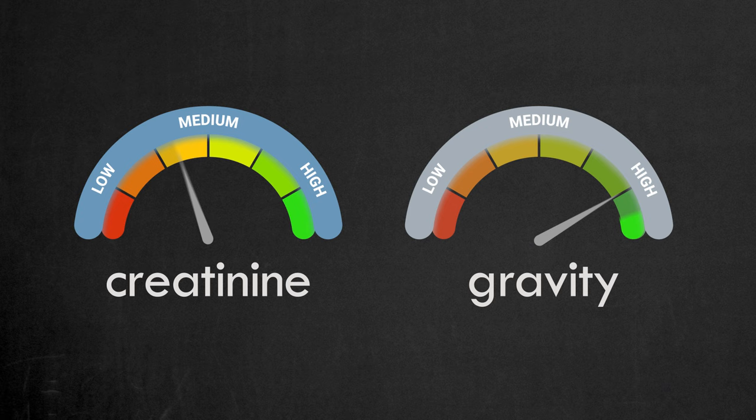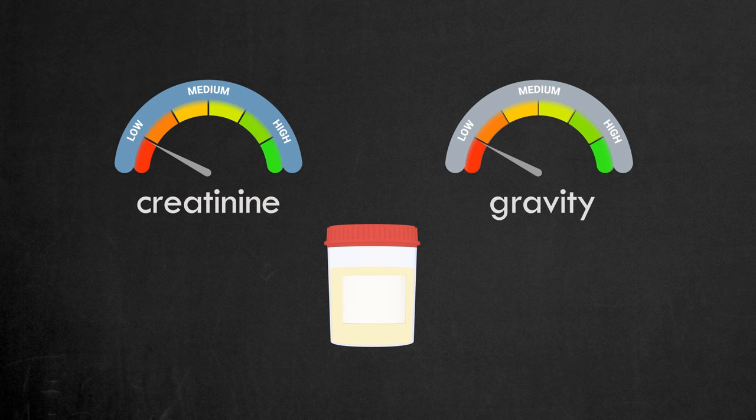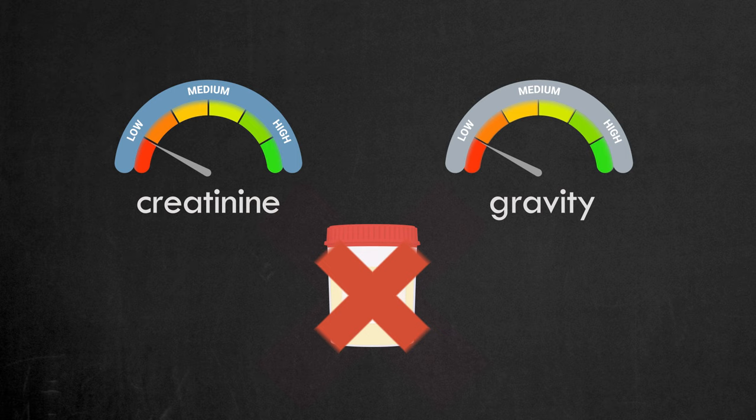Drinking this much water will lower creatinine levels and the specific gravity of the urine. It will also change the color of the urine. If these parameters are out of the normal range, the sample will be rejected as diluted.